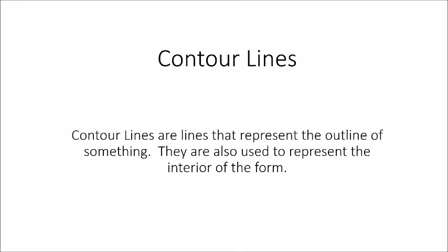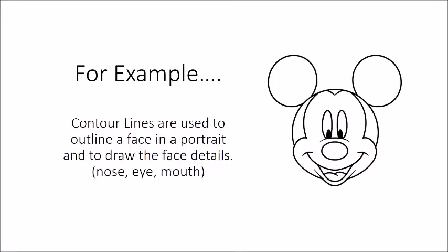We're going to be using what are called contour lines. Contour lines are the lines that represent the outline of something, and they're also used to represent the interior of that form. So for example, if you were to outline a face and then you also have the inside features of the face that are aligned. This is a portrait of Mickey Mouse. This is not a one-line portrait like we're going to make, but this shows what contour lines are — there's no shading, just the lines showing the features and the outline of the space.